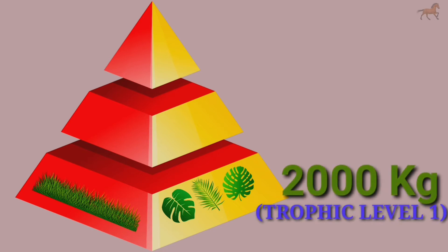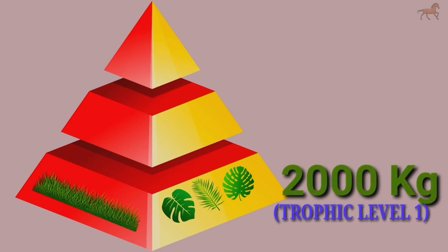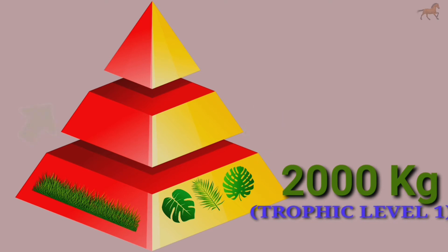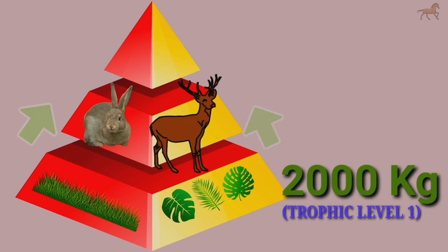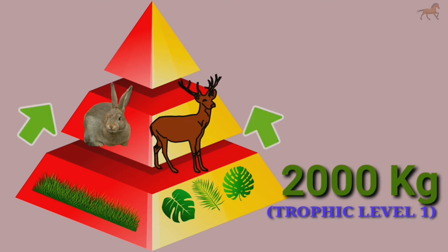We can also understand this law with the help of a pyramid of biomass. In this pyramid of biomass, the first trophic level is occupied by the producers.